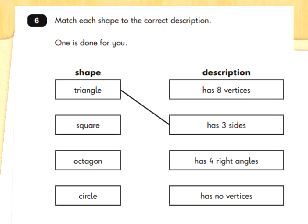Match each shape to the correct description — one is done for you. We've got shape names: triangle, square, octagon and circle. The descriptions are: has eight vertices, has three sides, has four right angles, has no vertices. Pause the video and tell someone at home another word for vertices. Vertices — or corners, if you please. We've just learned that an octagon has eight sides, and where sides meet that makes a corner or a vertex. So an octagon has eight vertices — eight corners, if you please.